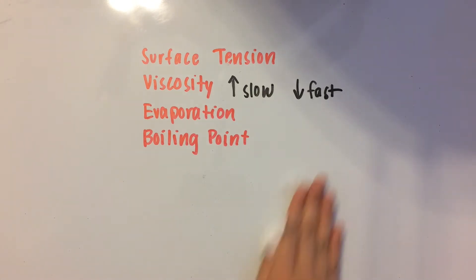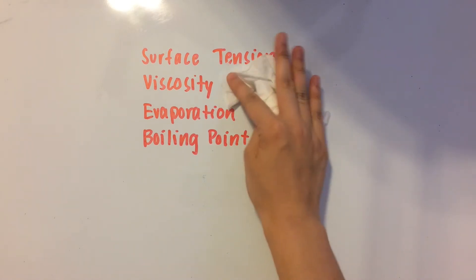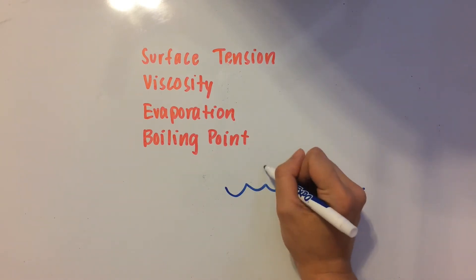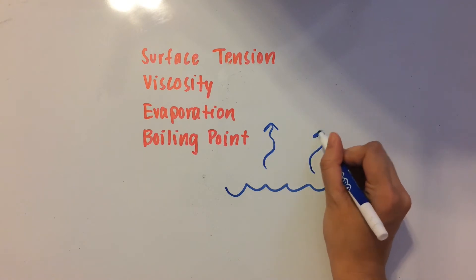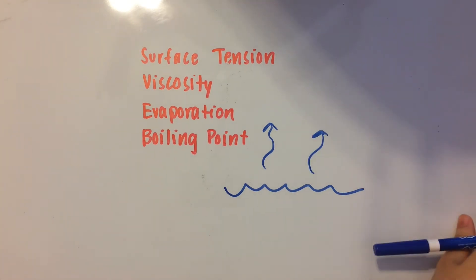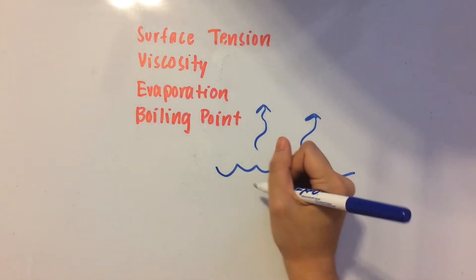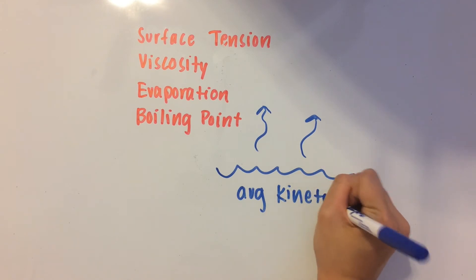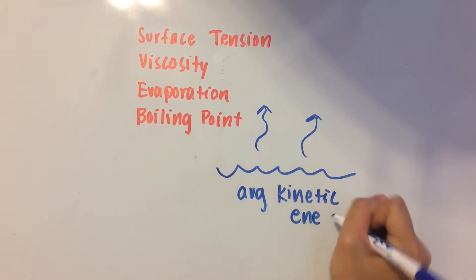Next one is evaporation. That's pretty easy. That's when parts of a liquid evaporate into a gas. Let's say we have a container of water, and some of the water molecules are evaporating into water vapor. You have an average kinetic energy that you start out with when you have your water.